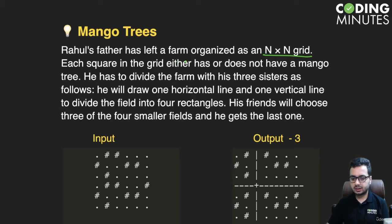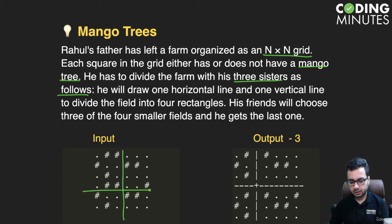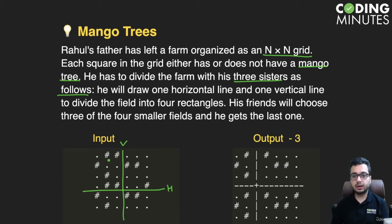Each square in the grid either has or does not have a mango tree — the hash represents a mango tree. Rahul has to divide the farm with his three sisters by drawing one horizontal line and one vertical line to divide the field into four rectangles. This vertical line and this horizontal line divide it into four quadrants.